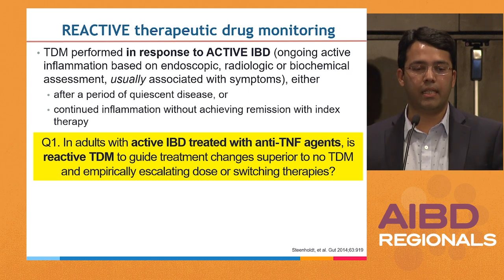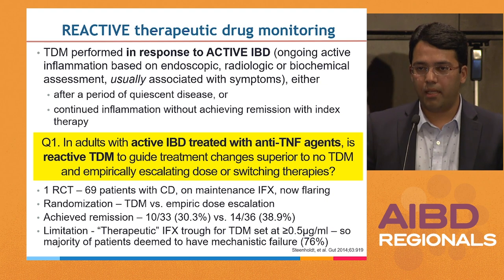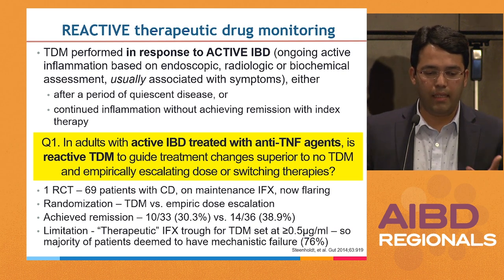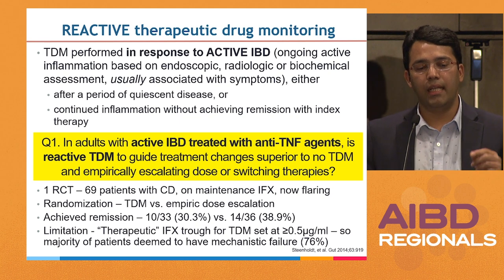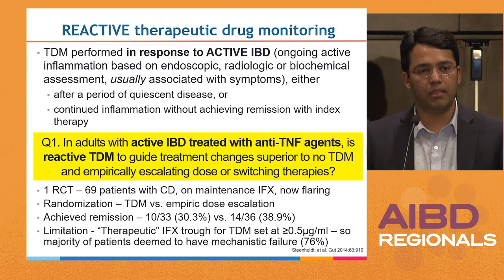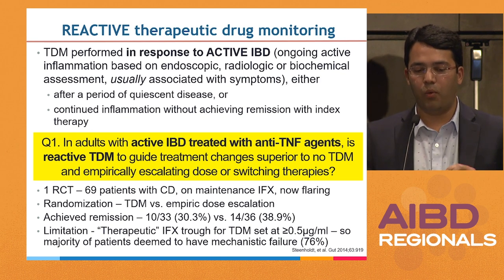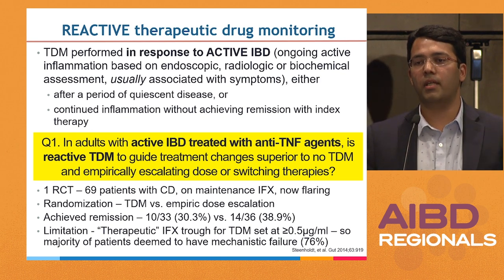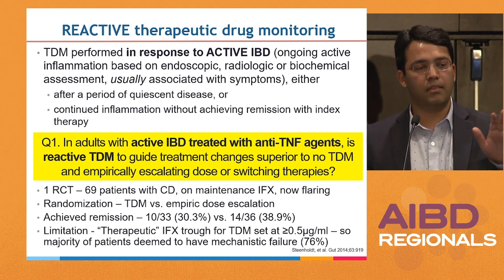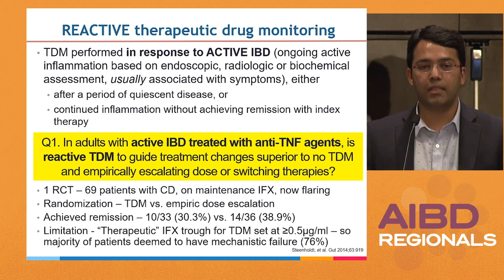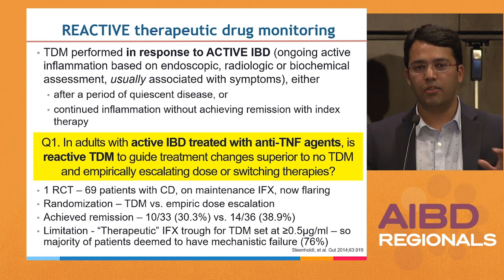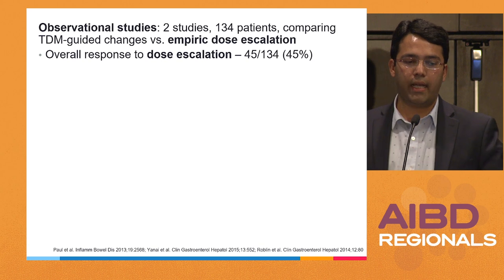There is only one randomized trial to date proposed to inform reactive TDM. In this trial, there was no difference in rates of achieving remission with reactive TDM compared to empirical treatment changes — in fact, numerically, empirical changes seemed better. However, the biggest flaw in this paper is that they considered a therapeutic infliximab level as any infliximab that is present — a level of 0.5 was considered adequate, whereas we now say an adequate level is at least 5. So the threshold was 10 times lower.